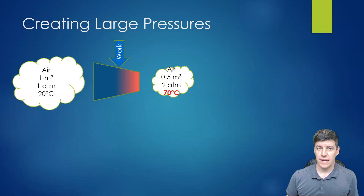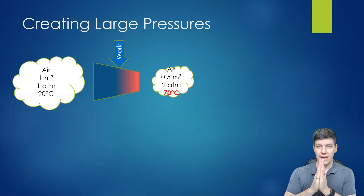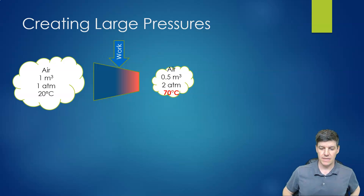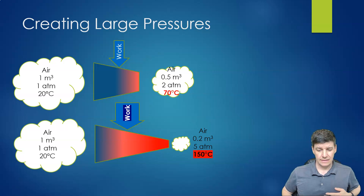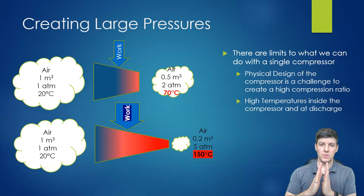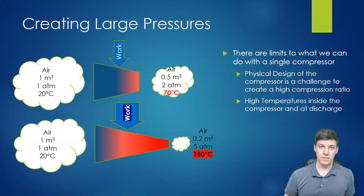If we have an air compressor and want to compress air to a moderate pressure, we may do that with one device. But if we want to increase that pressure more and more, it becomes very challenging — we have to keep squeezing, and that air has to occupy a very small space. Additionally, it's very difficult to design a compressor that takes a large volume and squeezes it to a very small space, and the temperature is going to continue to increase and may get too hot.